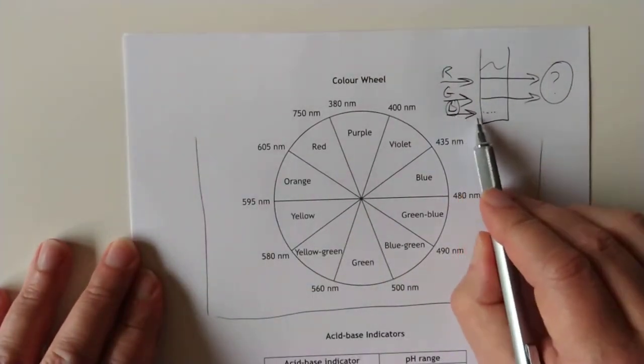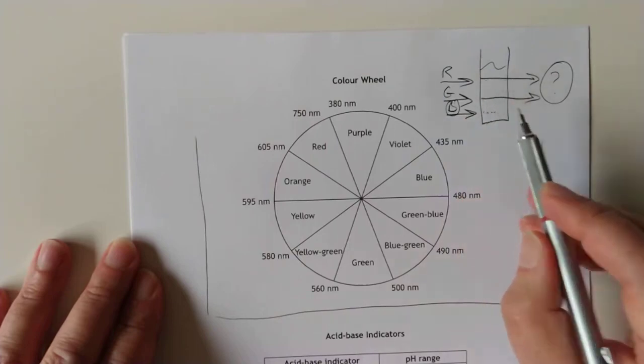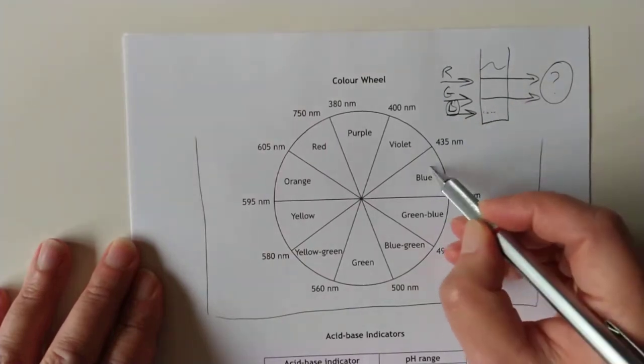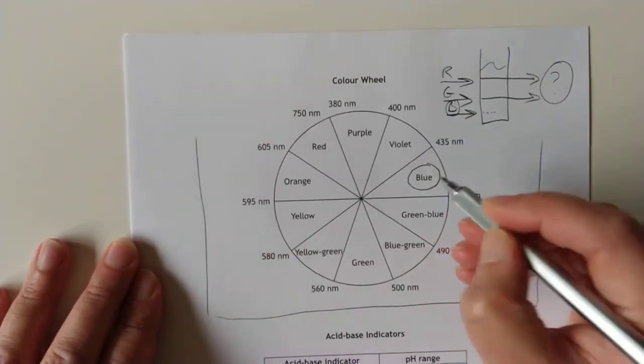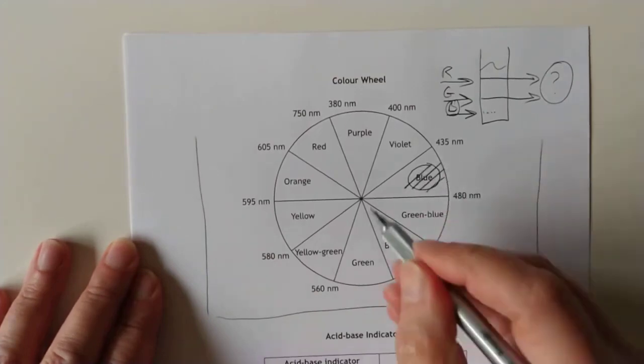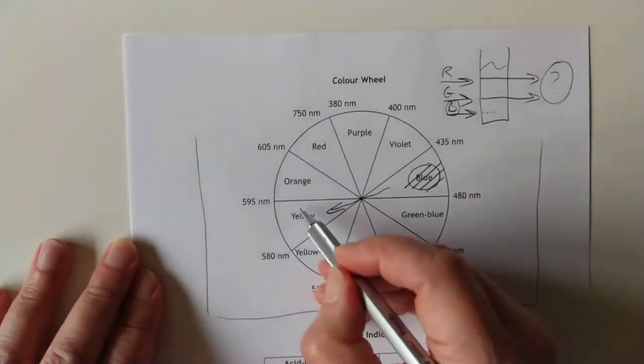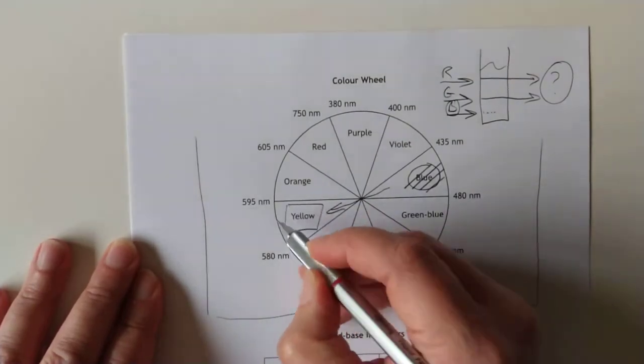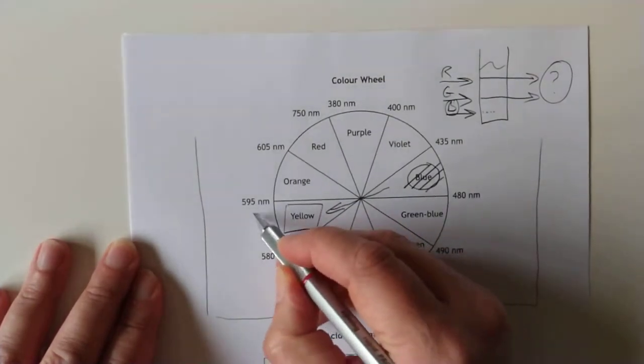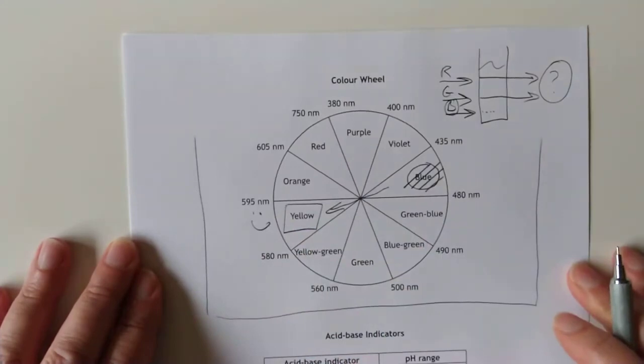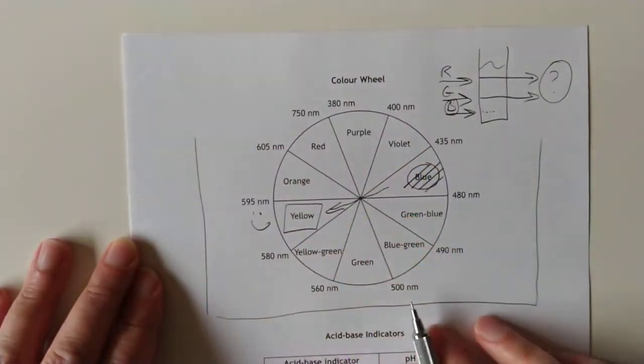So I'm saying that blue light is being absorbed by the sample. Red and green make it through. So if we have a look at this, we find blue. This is the color that's being absorbed. And if you look across at the other side of the color wheel, you find yellow. That is the color you will see coming out the far end. So that's the purpose of this color wheel, folks.